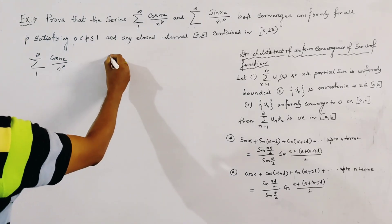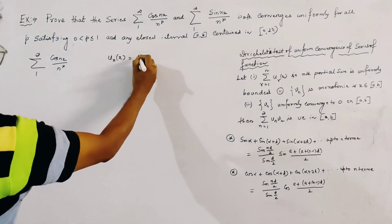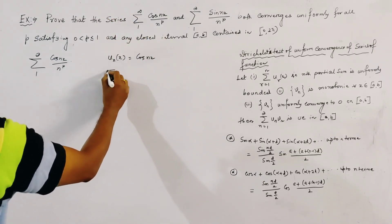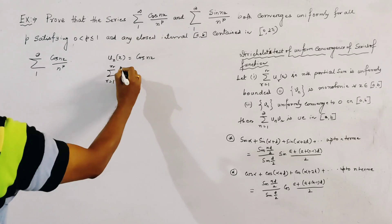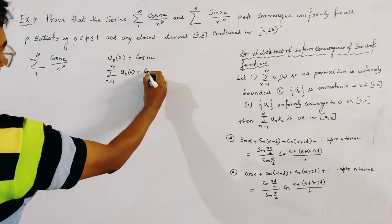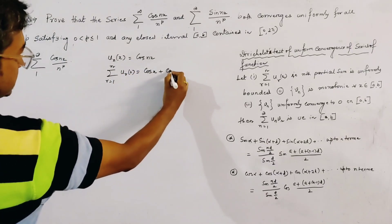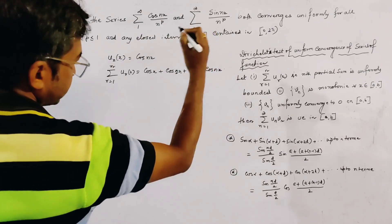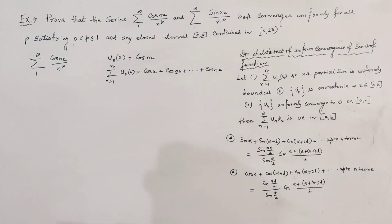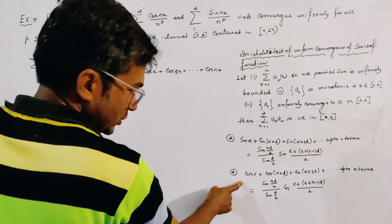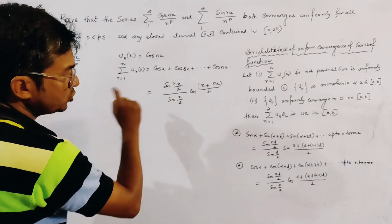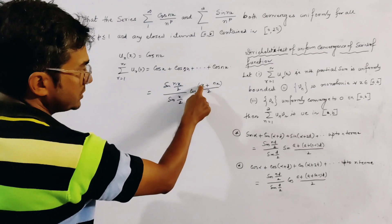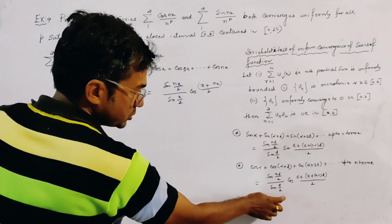Here we take u_n(x) = cos(nx), and we know that the partial sum summation r=1 to n of u_r(x) equals cos(x) + cos(2x) + ... + cos(nx). By the trigonometric identity, this equals sin(nx/2) · cos((n+1)x/2) divided by sin(x/2). This uses the sum formula where the first and last angles are involved.